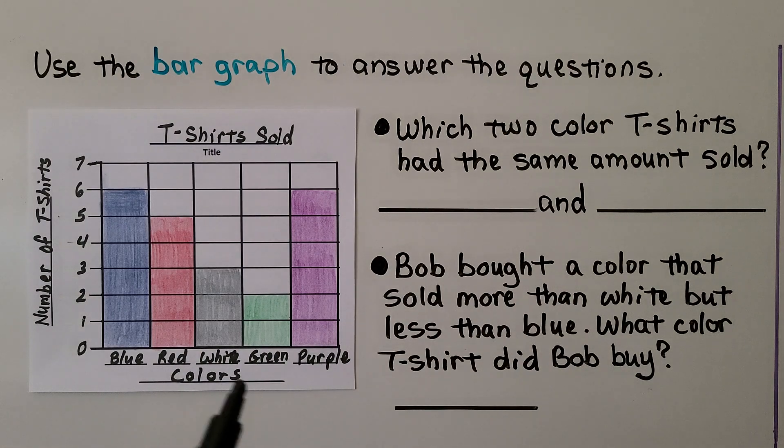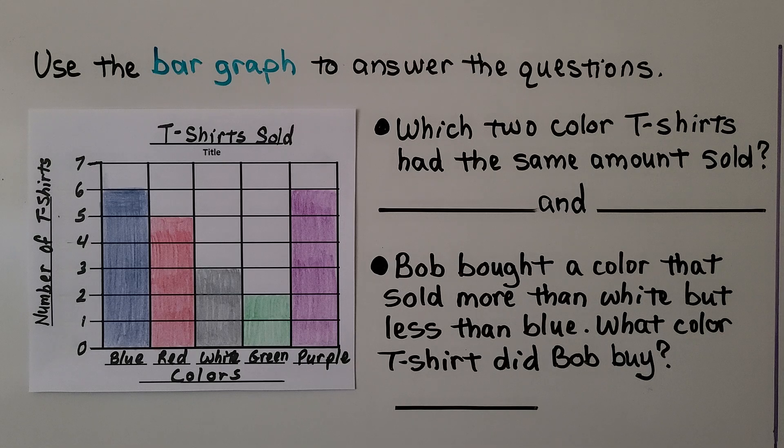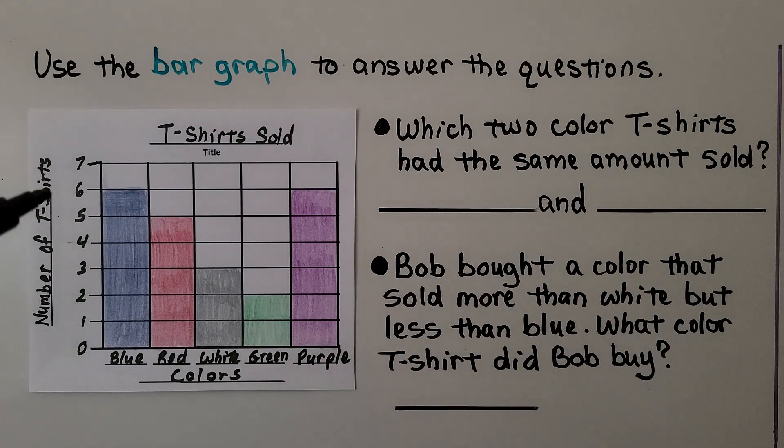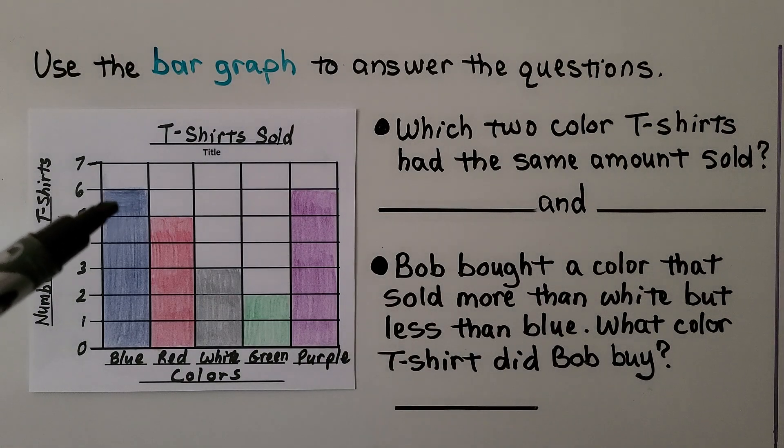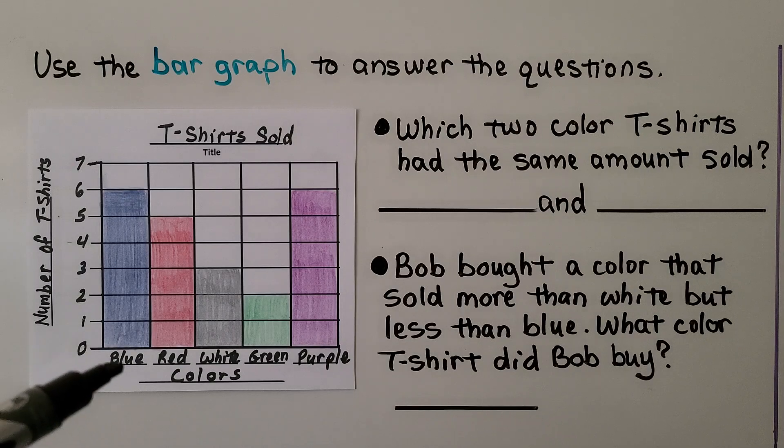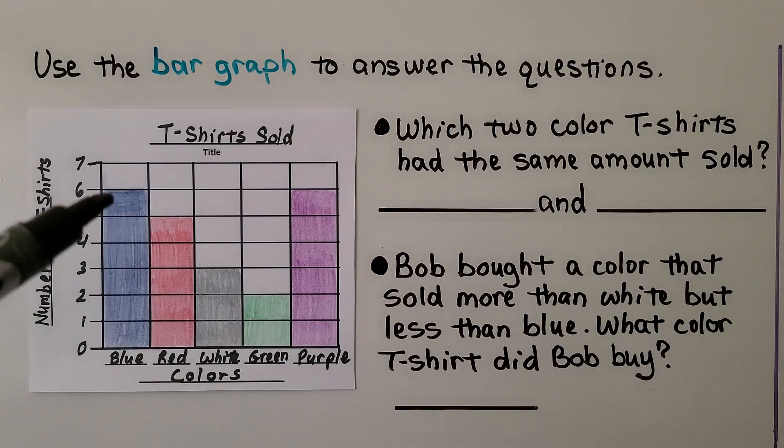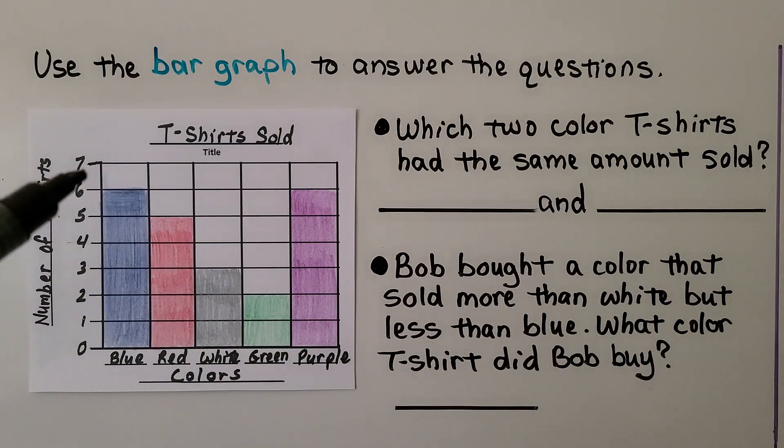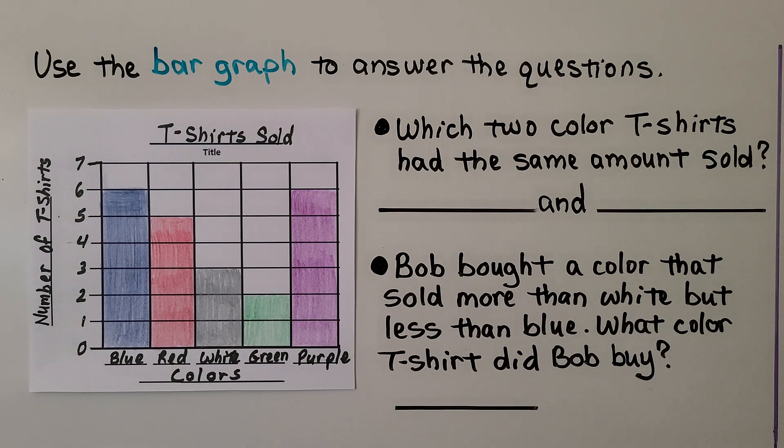The question is which two color t-shirts had the same amount sold. We look for two colors that have the same bar graph height and we look blue and purple are both at six. So the answer is blue and purple.